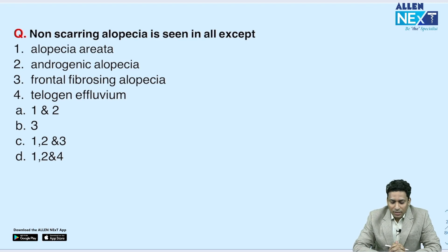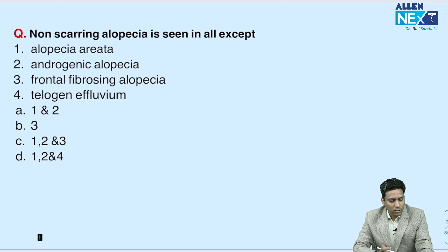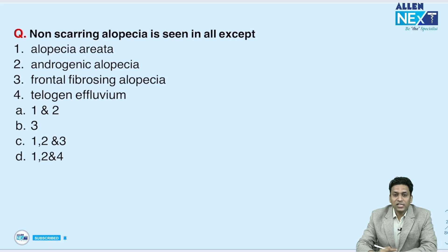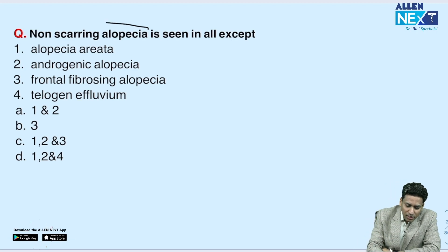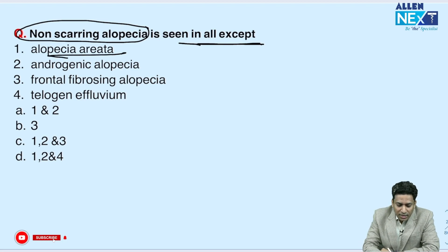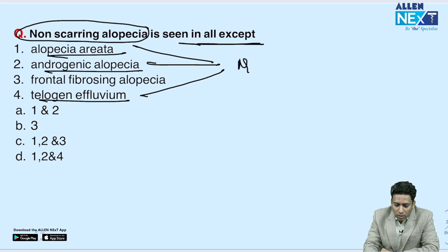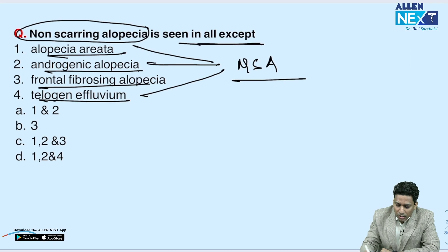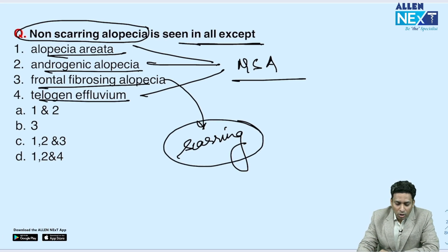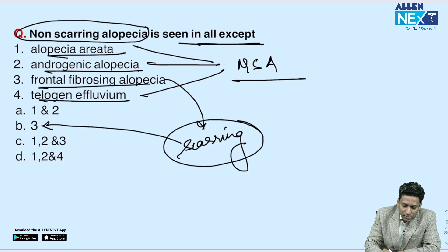The first question was based on alopecia. As we know, alopecia can be scarring and non-scarring type, and they asked about non-scarring type of alopecia seen in all except. Alopecia areata, androgenetic alopecia, and telogen effluvium all cause non-scarring alopecia, while frontal fibrosing alopecia causes scarring or permanent type of alopecia — so that is the answer here.